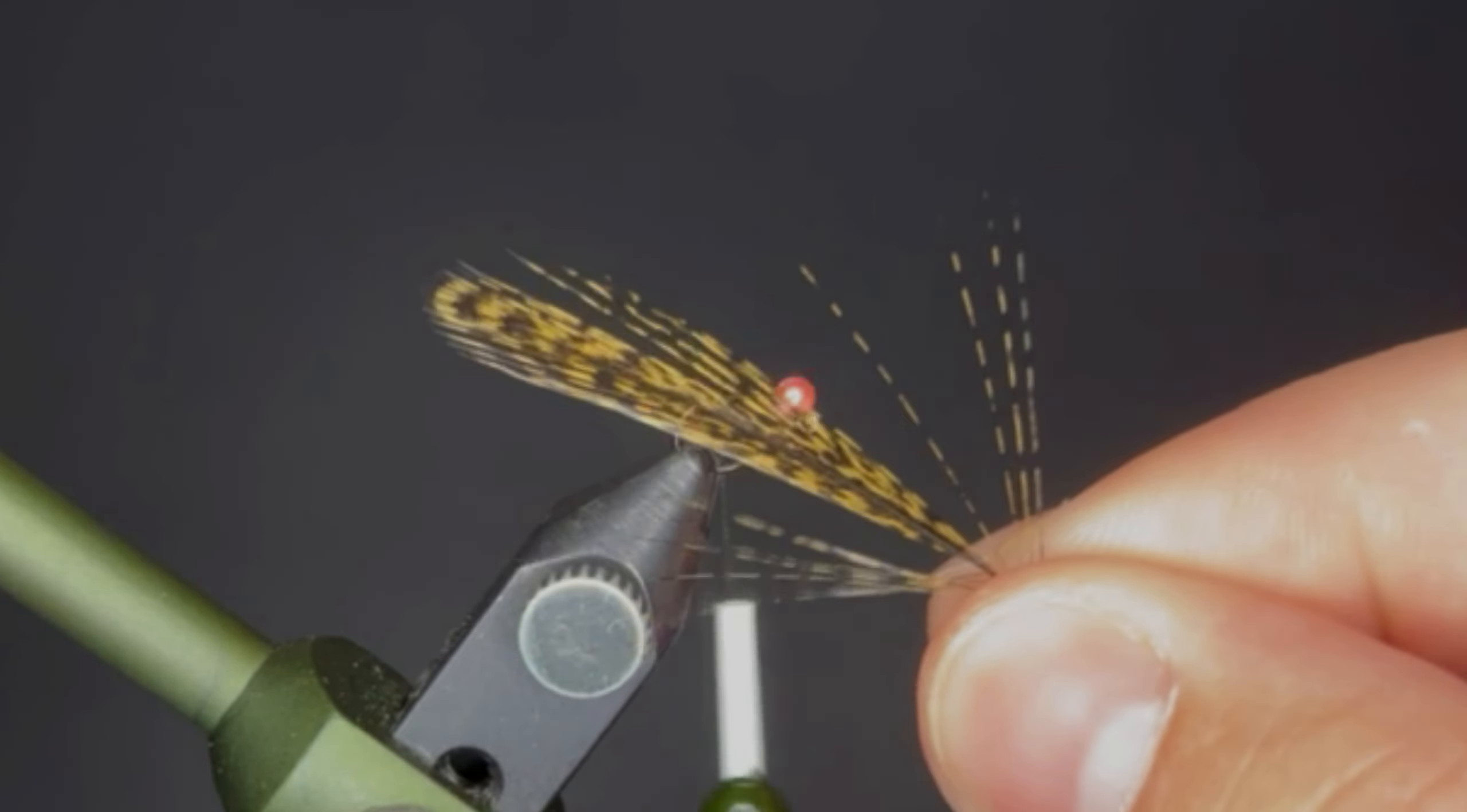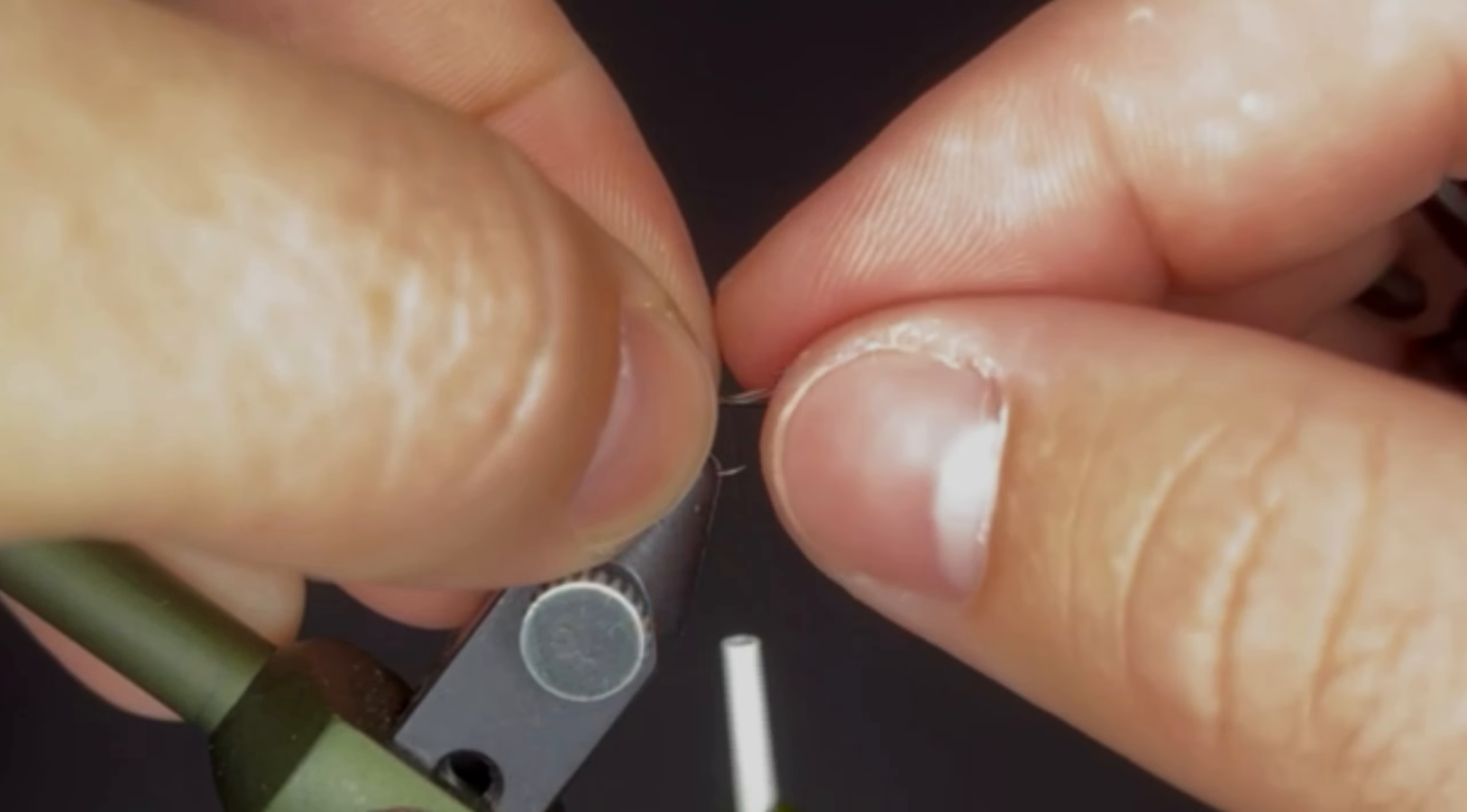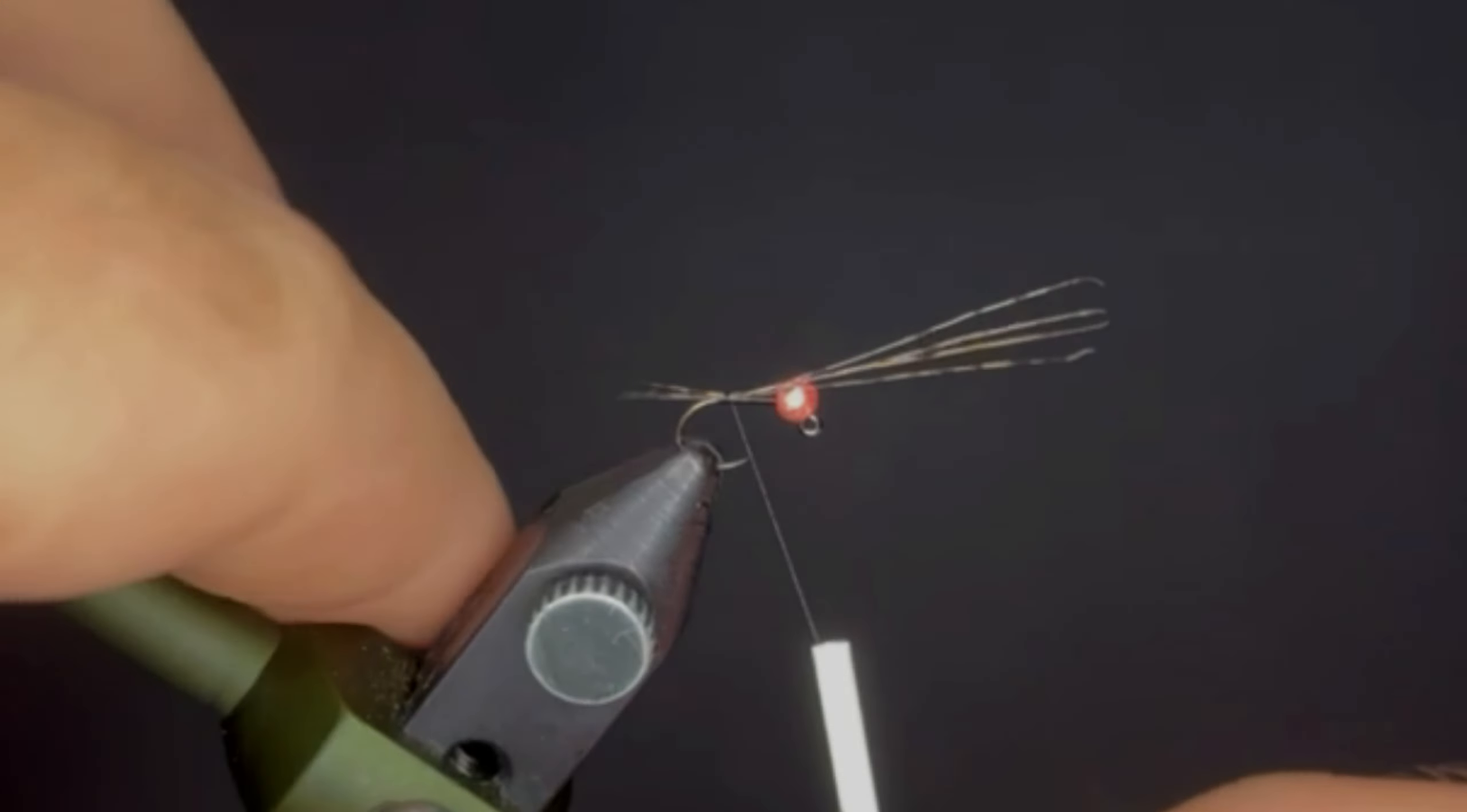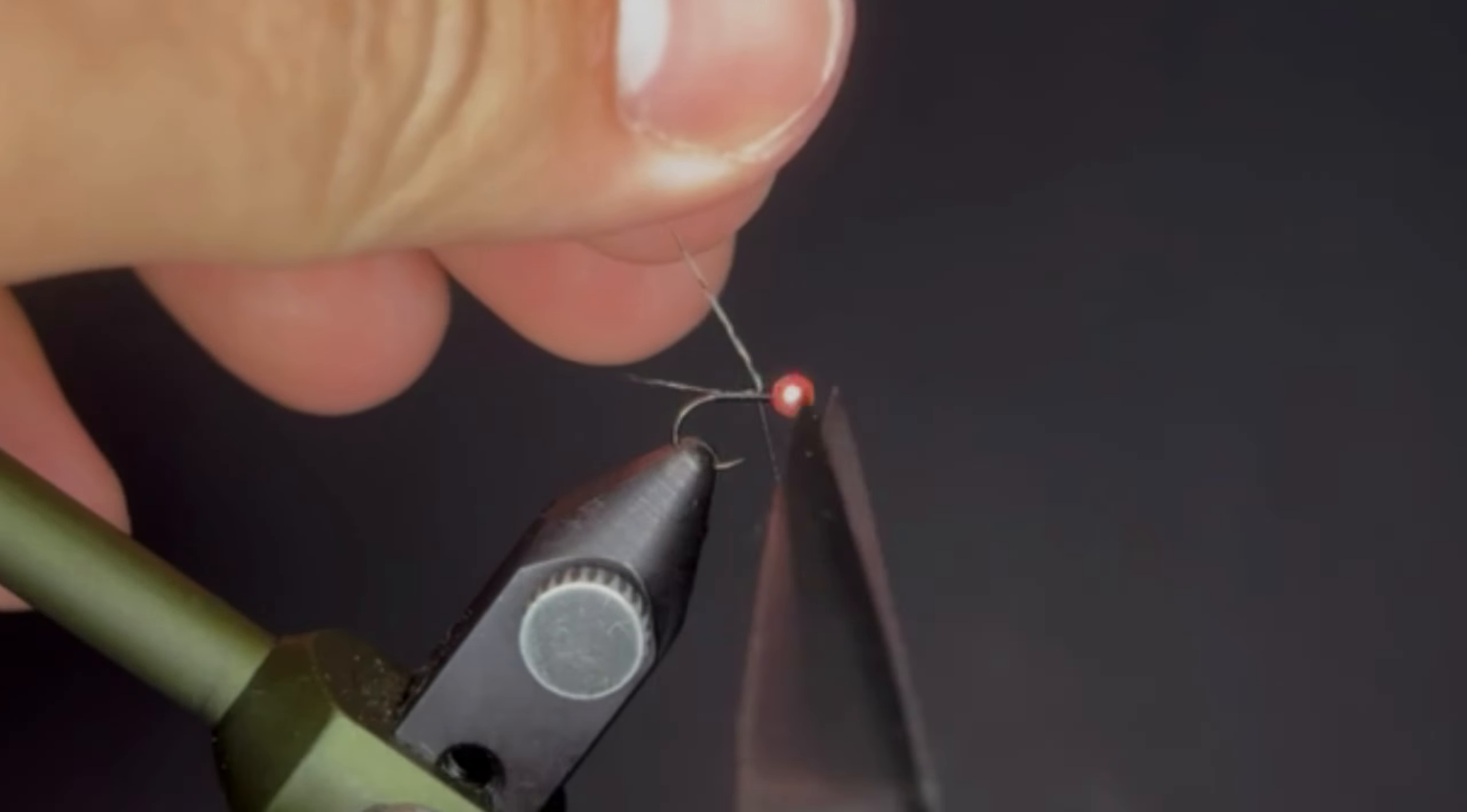Using some CDL fibers, pulling off about four fibers from the stem. Do a couple of loose wraps to tie them to the hook, then pull those tailing fibers to length. A couple more wraps forward to secure those tailing fibers and cut the excess off.